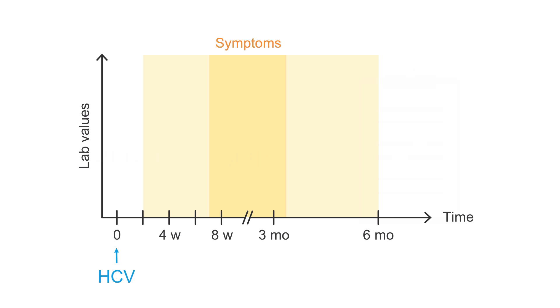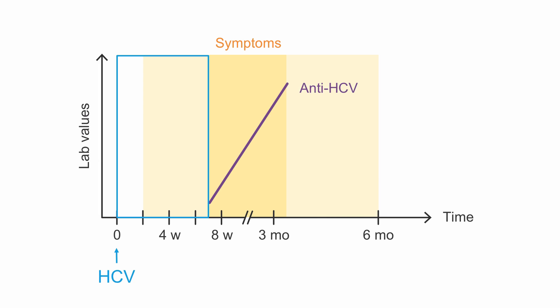In Hepatitis C, we have the problem of a diagnostic gap early after infection. As we discussed, we start our screening by measuring anti-HCV antibodies. However, as you can see, these antibodies are only detectable 7 to 8 weeks after infection. We call the time period after infection, but before anti-HCV antibodies are produced, the serologic gap.